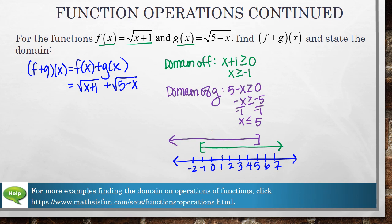So we can see that these overlap right here. So the values that will go into both f and g are going to be those values from negative 1 up to 5 including both of those.